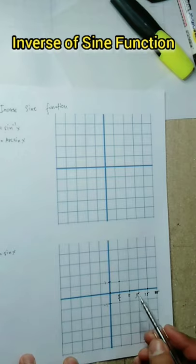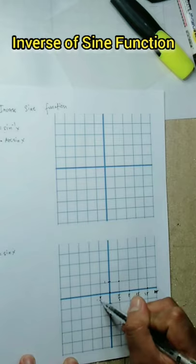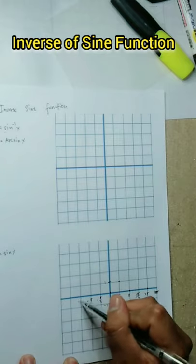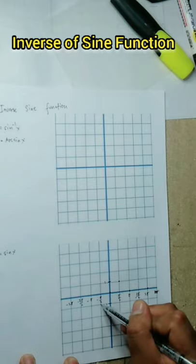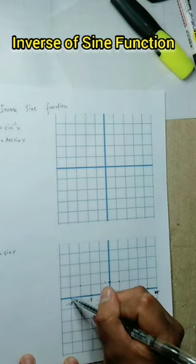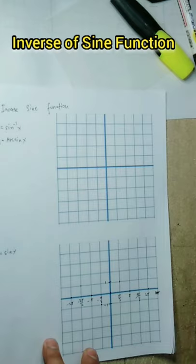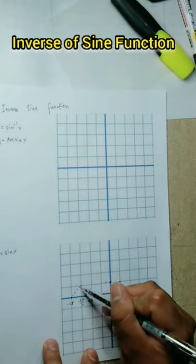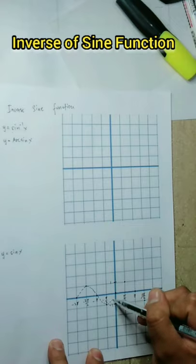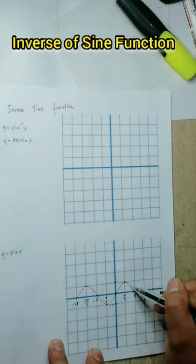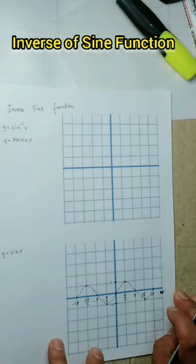This time, gagraph ako ng broken line para ipakita kung bakit may restricted domain — bakit kailangan ng restricted domain para mag-graph ang inverse function o inverse trigonometric function. Meron tayong restricted from negative π/2 to π/2. Kailangan gawin nating one-to-one function yung trigonometric function para magkaroon ng inverse trigonometric function.